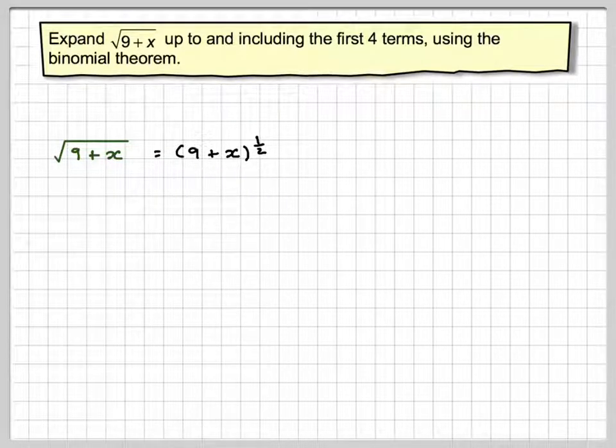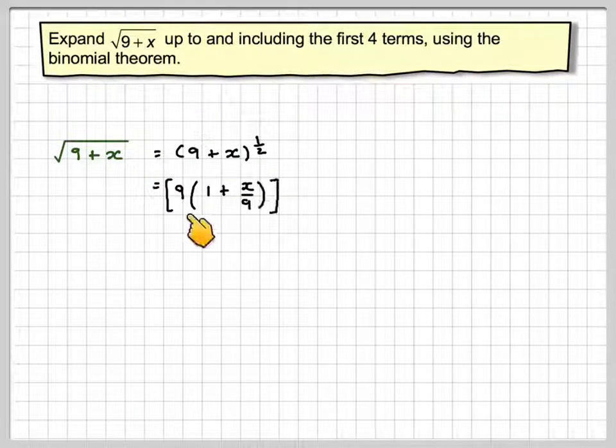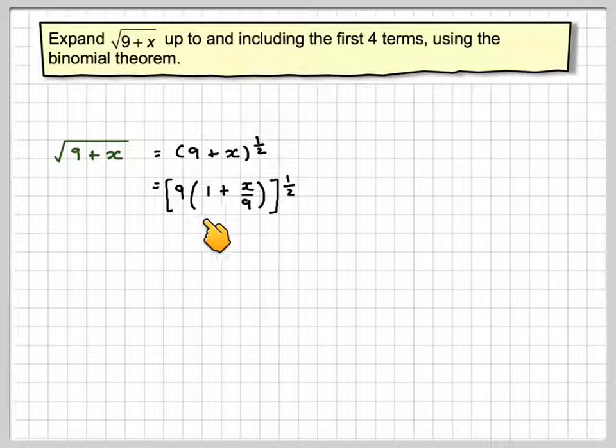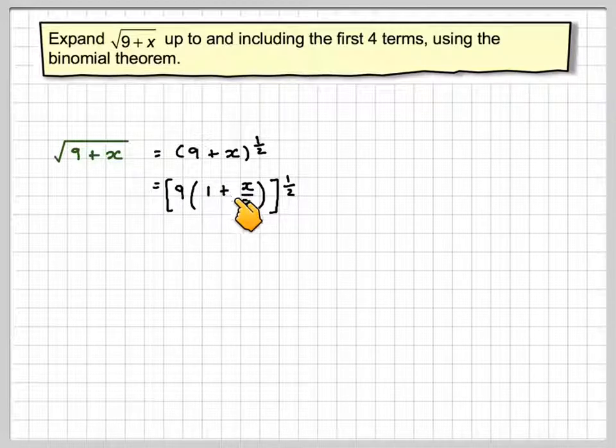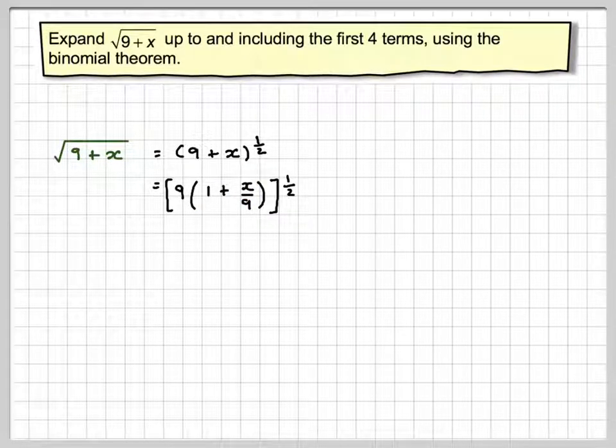Now we can make this 1 plus x by factorizing out a 9. So we've got 9 brackets 1 plus, and that becomes x over 9. If you think when you multiply back in you're going to get 9, and then you're going to get 9x over 9 which is x, so you get back to what you started with.